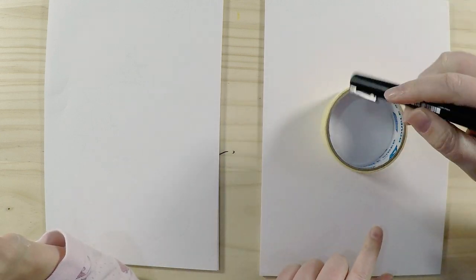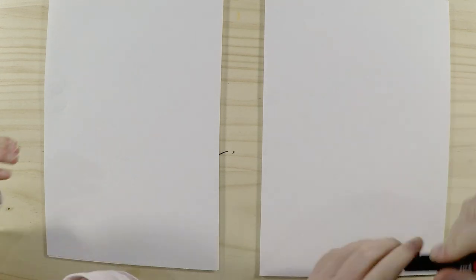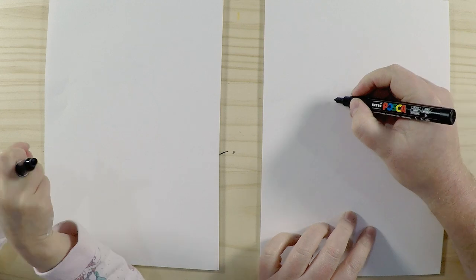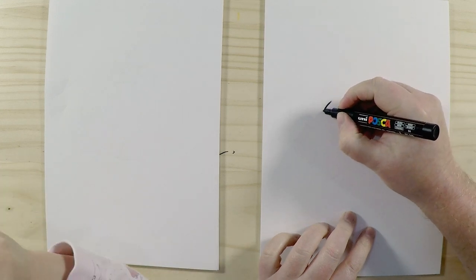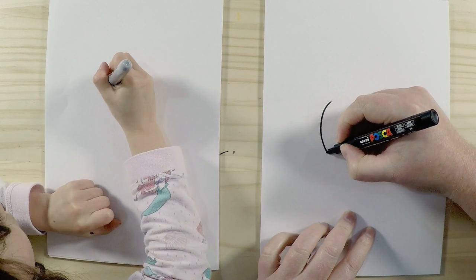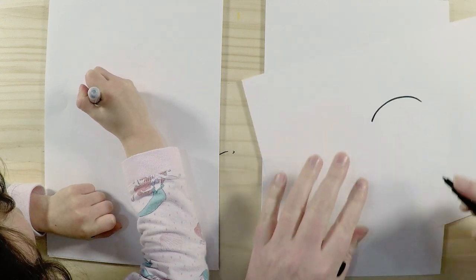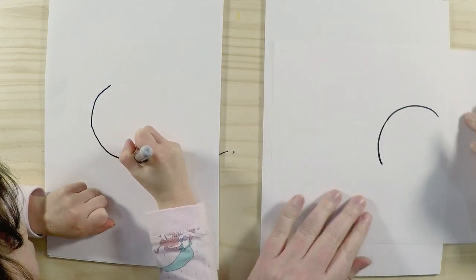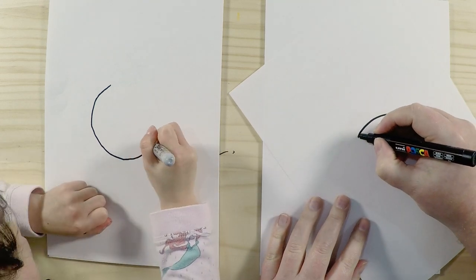You can trace around maybe a glass or a bowl or something like that. You can just draw it by hand—that's fine as well. So let's draw a nice circle here. I find that sometimes if you draw a little bit of a circle and then turn the paper, that makes it a little bit easier.